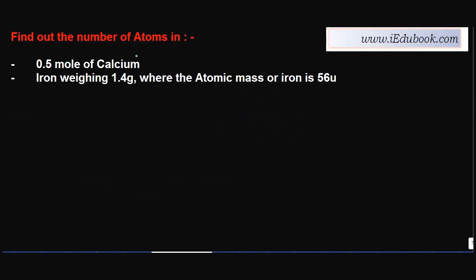Find out the number of atoms in 0.5 mole of calcium. Let's take the first one first. Let me call this as (a). Now, one mole of calcium will have 6.022 × 10^23 atoms.